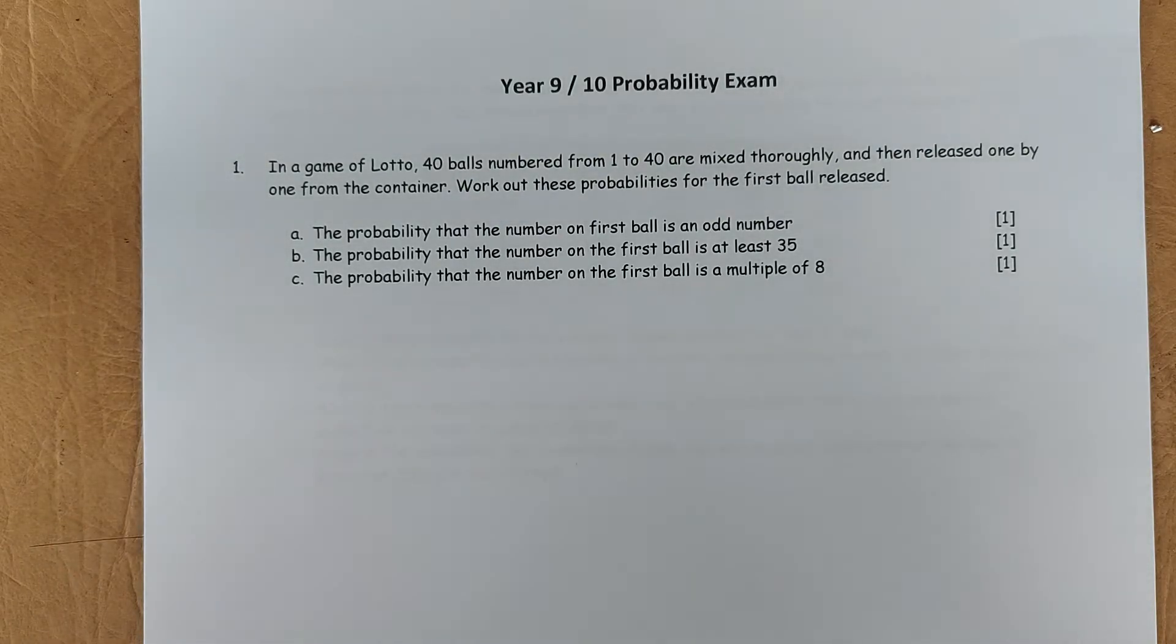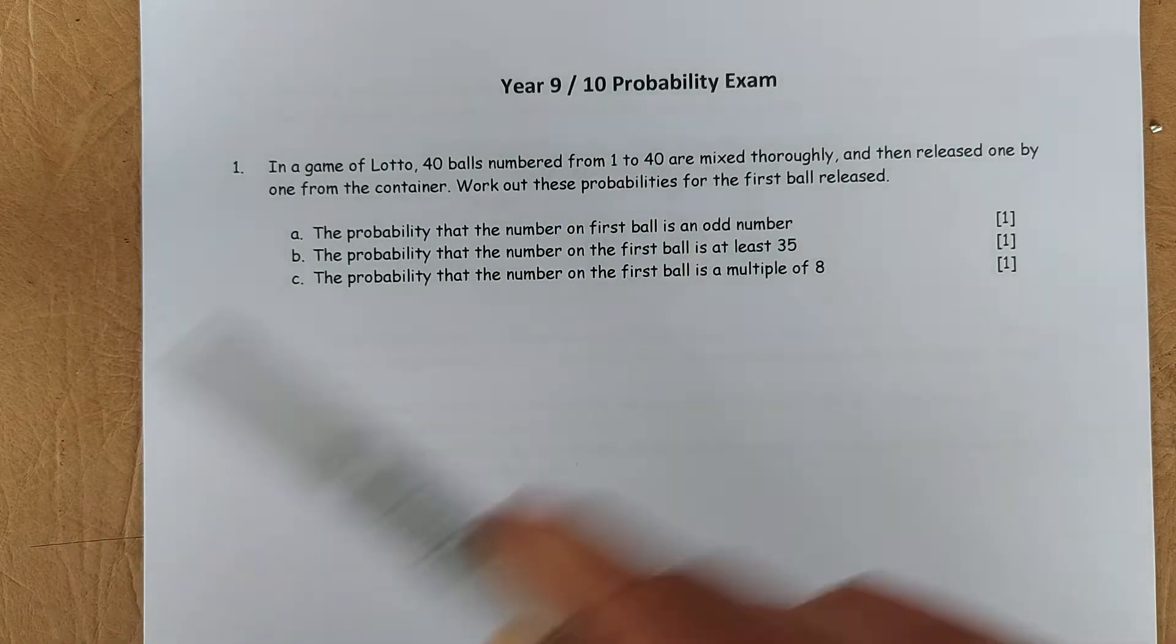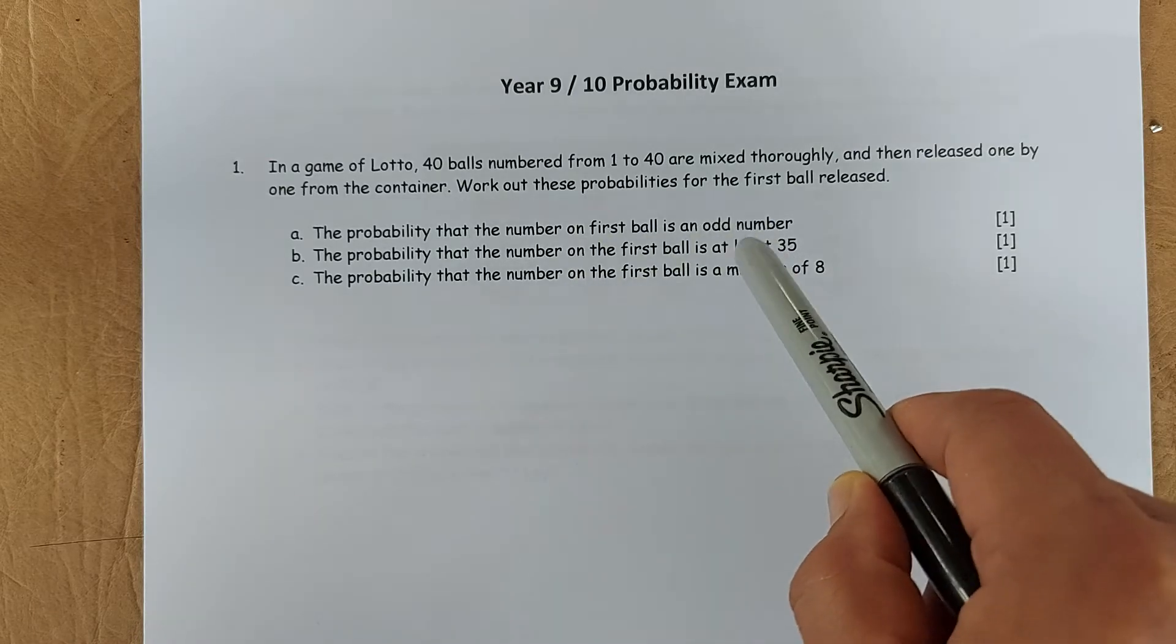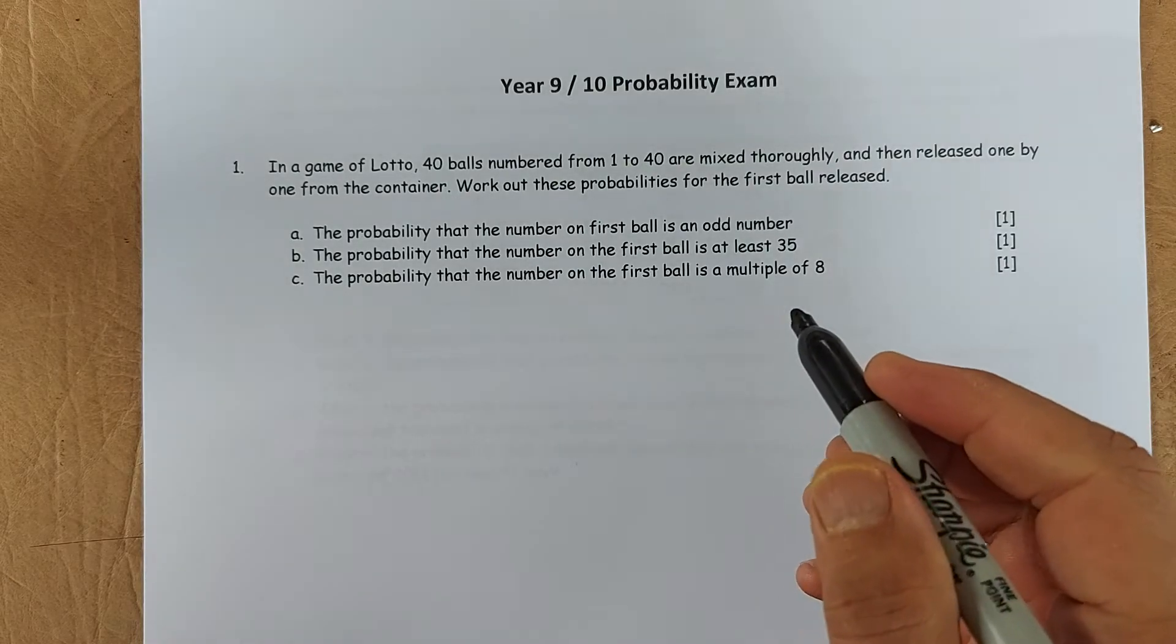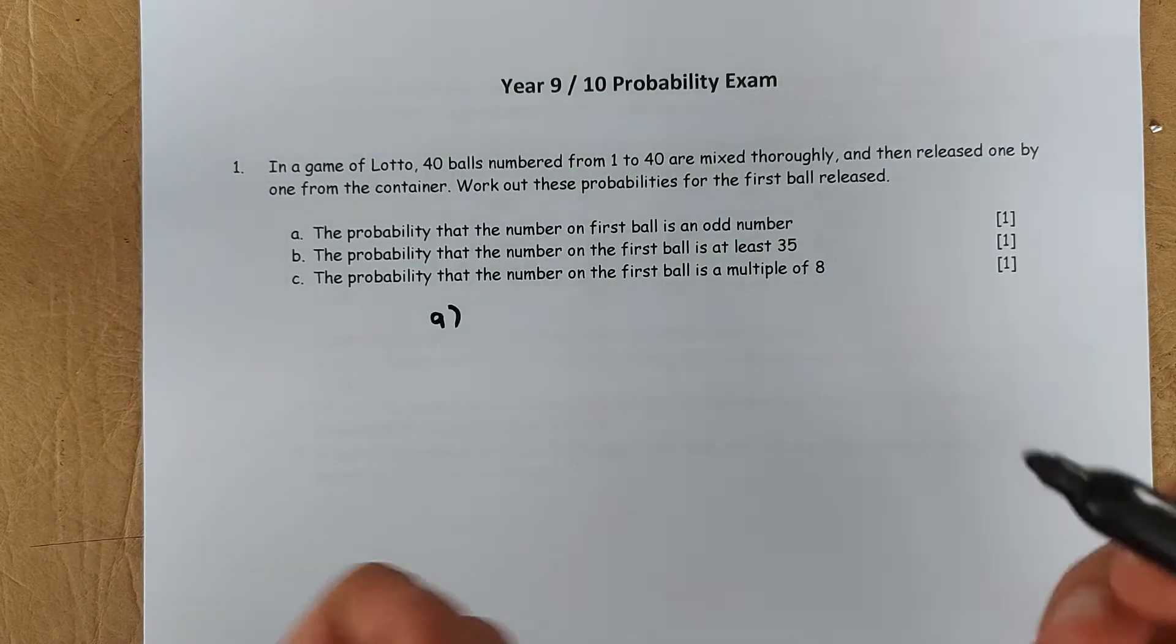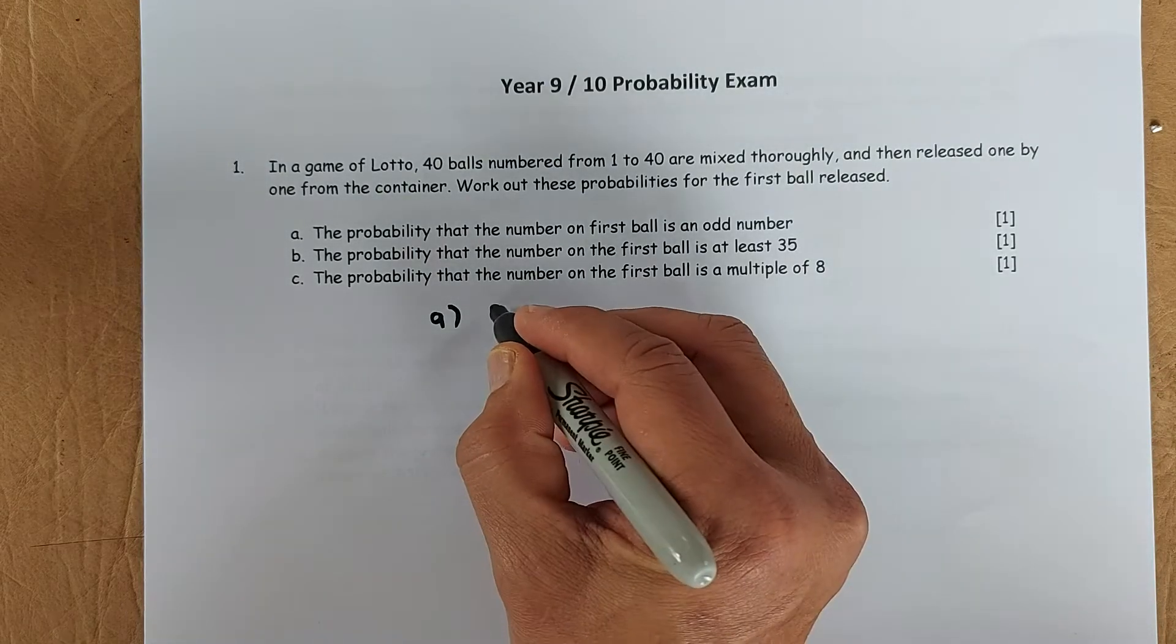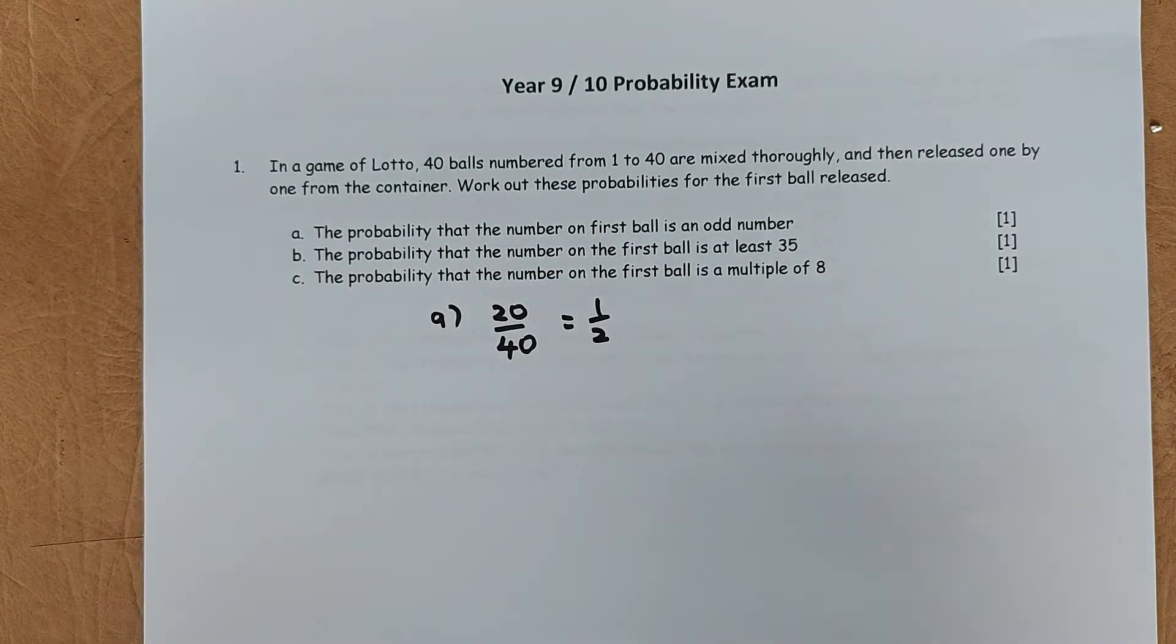So the first question is, in a game of Lotto, 40 balls were numbered from 1 to 40 and were mixed thoroughly, and then released one by one from the container. Work out this probability for the first ball released. The probability they are asking you, what is the probability that the number of the first ball is an odd number. So if you know, half of it is going to be odd. So 1, 3, 5 to 39 is going to be 20, and 2, 4, 6, 8, 10 is going to be another 20. So the probability for the first question is 20 over 40 or it is going to be half for simplicity sake.